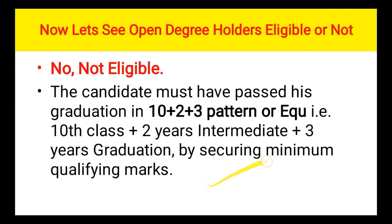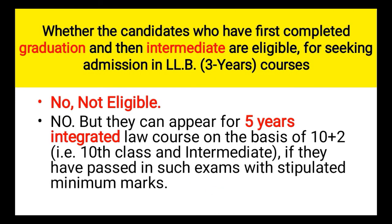So those who passed 10th, then 12th (whether first year/second year or open intermediate), and then completed a 3-year degree are eligible for 3-year LLB. An important point: whether candidates who first completed graduation — meaning those who did 10th then open degree via entrance without intermediate — are eligible for 3-year LLB or not? The answer is: NO, not eligible. But they CAN appear for the 5-year integrated law course on the basis of 10+2, that is 10th class and intermediate, if they have passed those exams with the stipulated minimum marks.